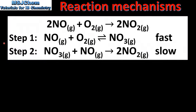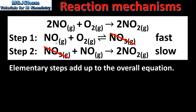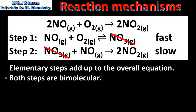In our next example we have a reaction mechanism where the second step is the slow step. We start by identifying any reaction intermediates. We can see that NO3 is produced in step 1 and consumed in step 2, therefore it cancels out. We are left with 2NO plus O2 in the reactants and 2NO2 in the products, so the elementary steps add up to the overall equation. If we look at the molecularity of the elementary steps, we can see that both steps are bimolecular.